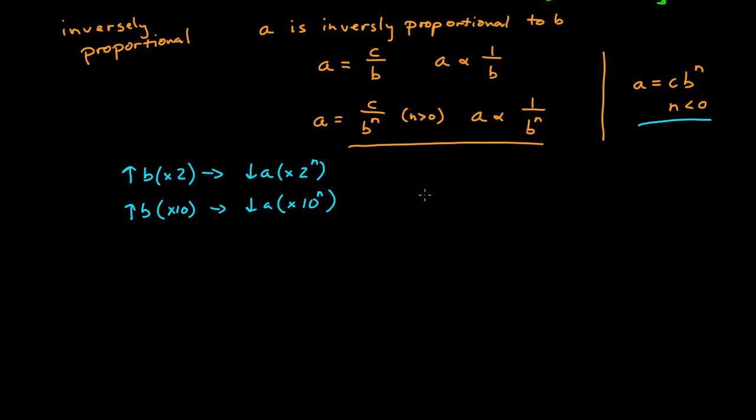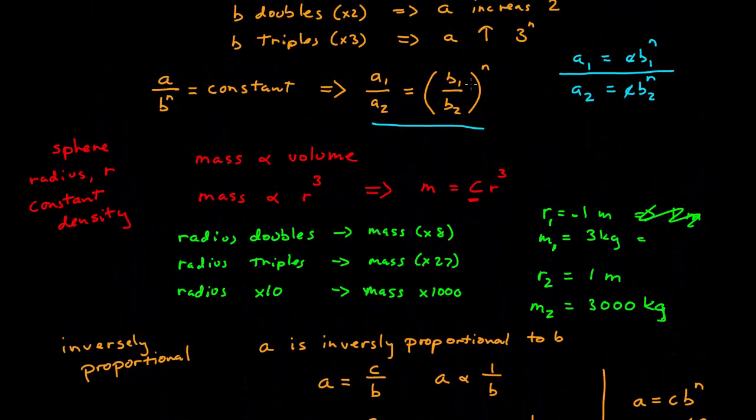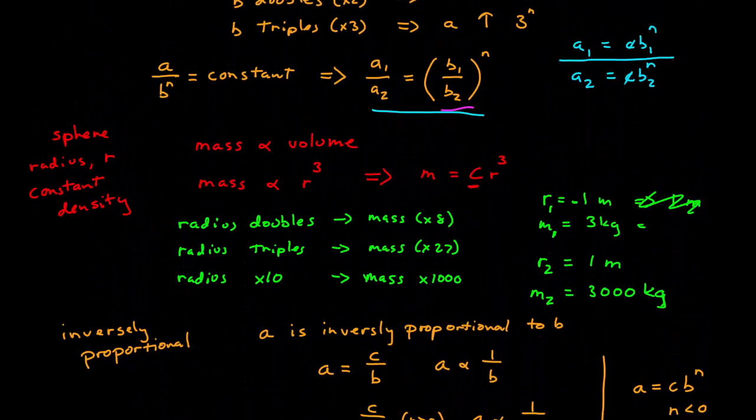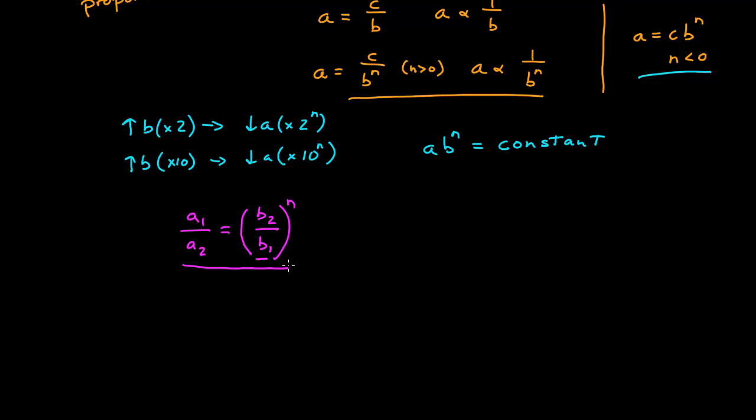So if I want to look at relationships, I can say that ab to the n is equal to some constant. Again, if I want to look at it in terms of ratios, I would say that a1 over a2 is equal to b2 over b1 to the n. And you can see it's the same as before, except that the b's are inverted. And so I can again use this proportional reasoning to solve problems without ever solving for what this constant happens to be.